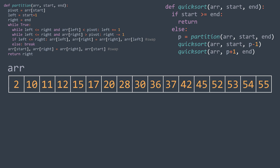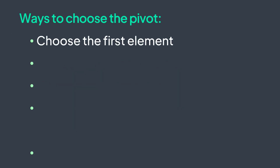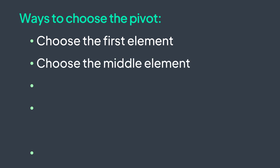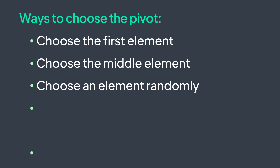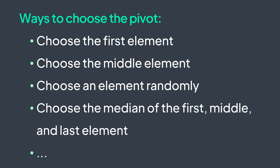Here is the recursion tree of the entire process. Note that here we chose the first element as the pivot, but there are other ways to do so — for example, taking the middle element, choosing an element randomly, or choosing the median of the first, middle, and last elements. Choosing the median is generally a good choice.